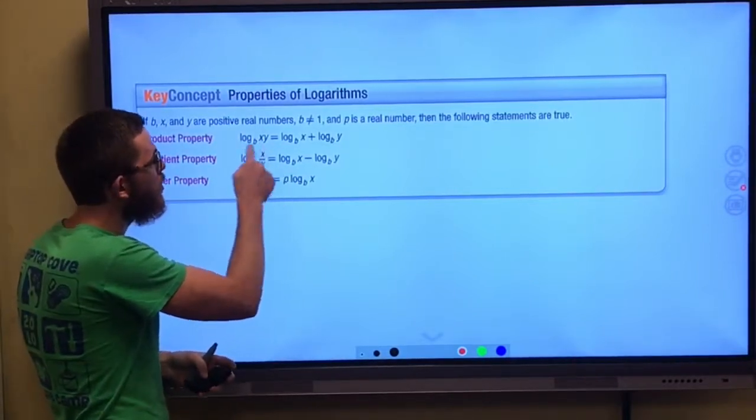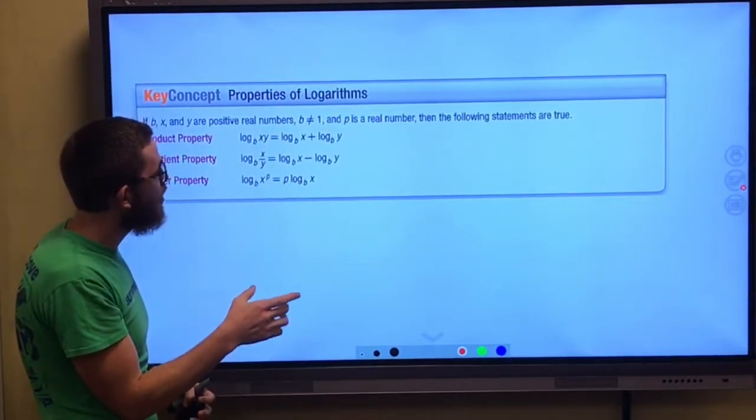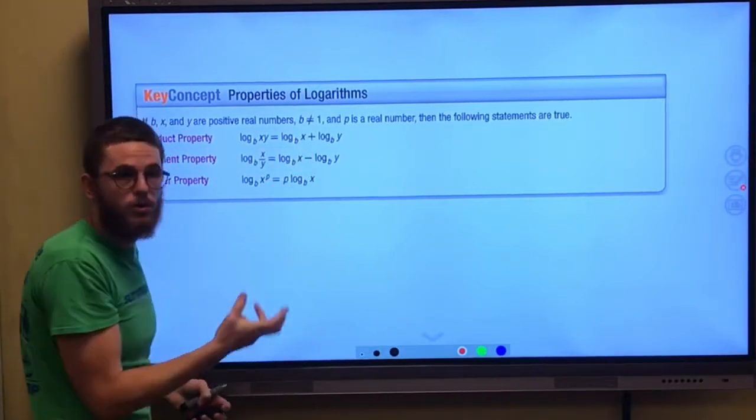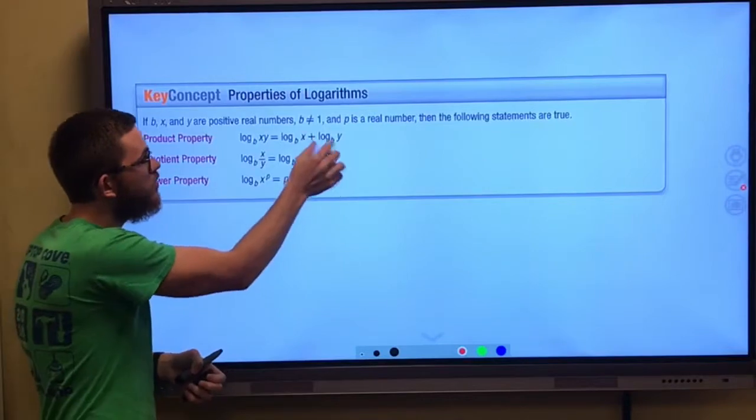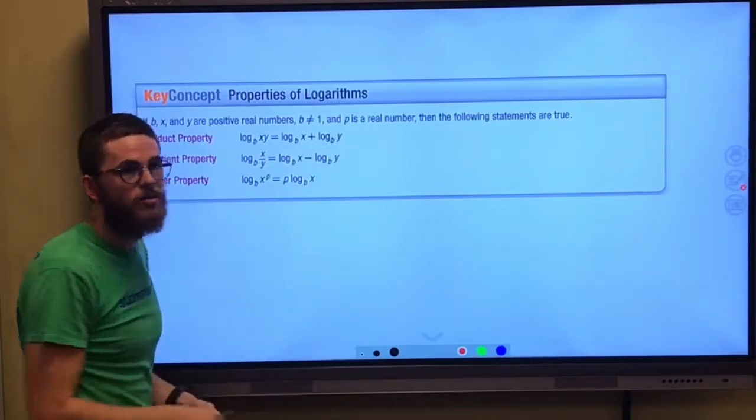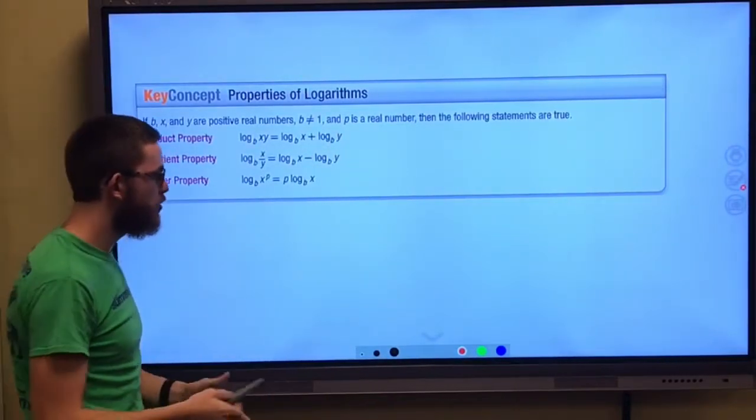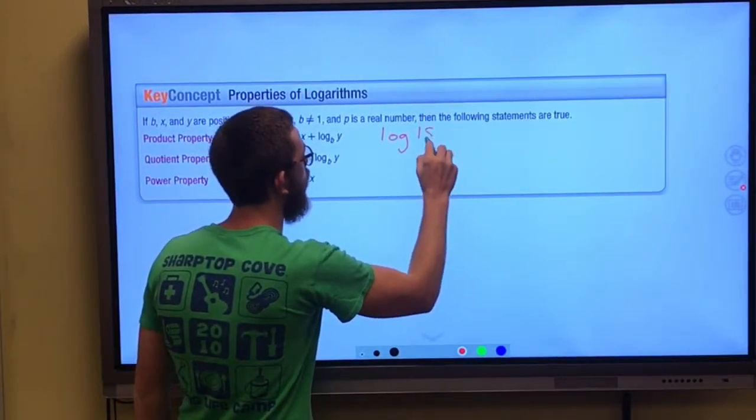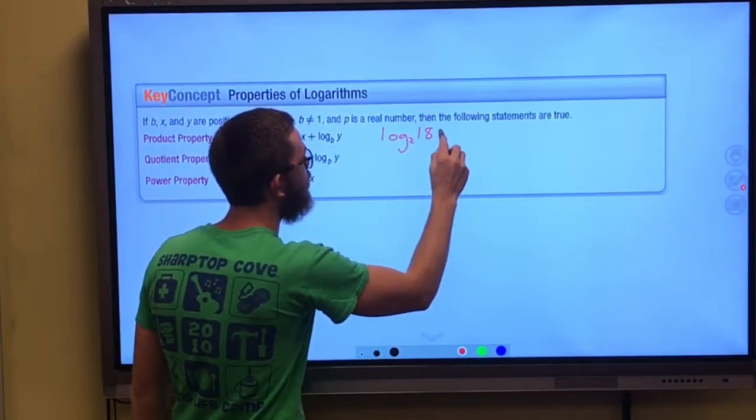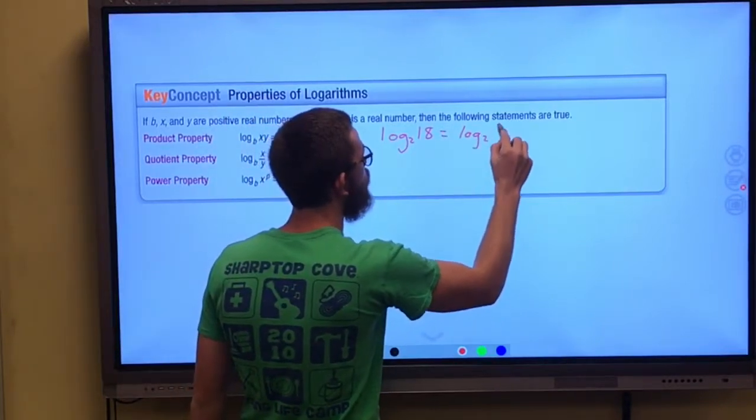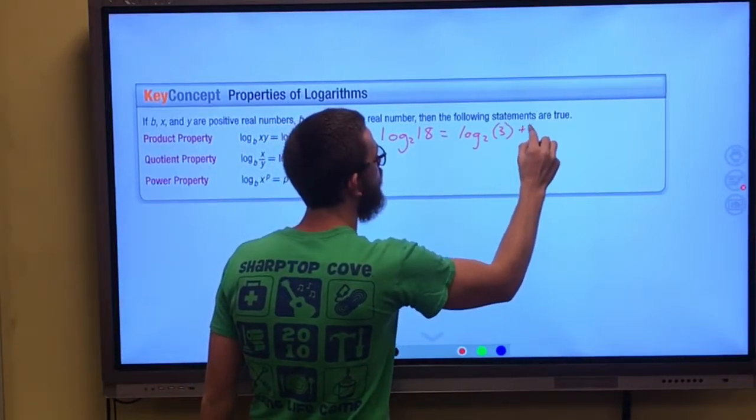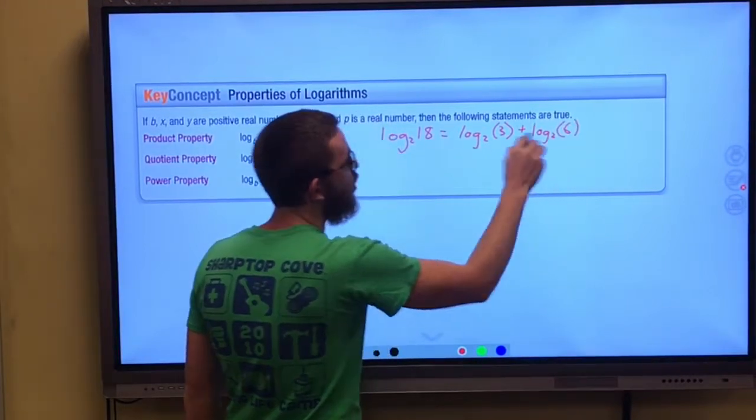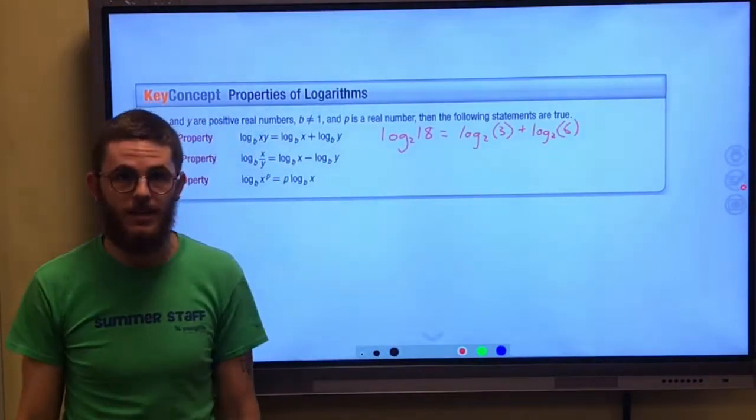the log of some base of two things being multiplied together is the log of that same base of one of those factors plus the log of that same base of the other factor. So an example for you, log base 2 of 18 would be the same thing as log base 2 of 3 plus log base 2 of 6, because we all know 3 times 6 gives us 18.